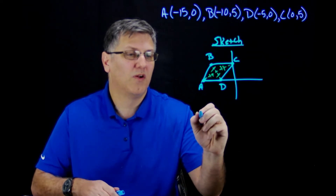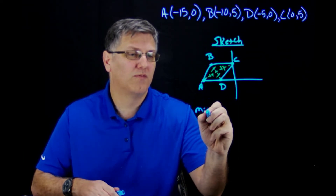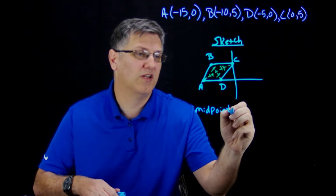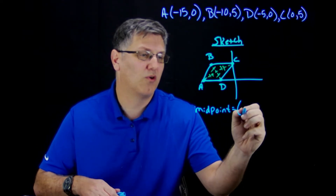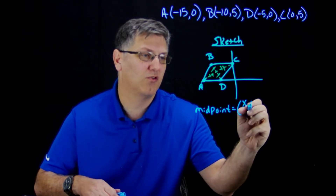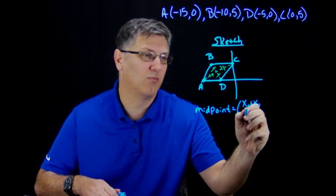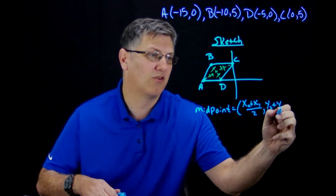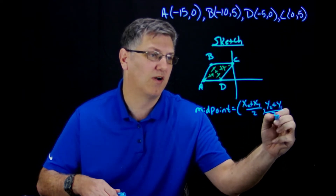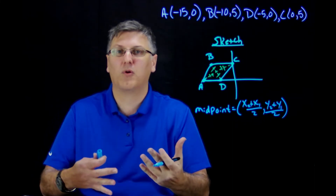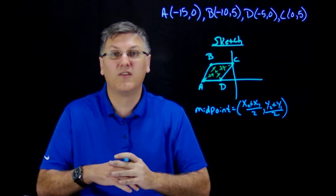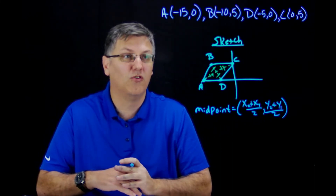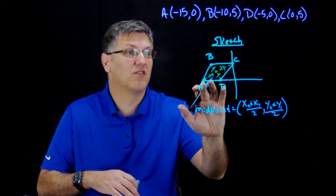The midpoint formula is nothing more than the average of my x's and y's: x₂ plus x₁ divided by 2, comma, y₂ plus y₁ divided by 2. That's the midpoint formula — we did this last semester. It's a pretty easy, straightforward formula to use. So let's just plug everything in.